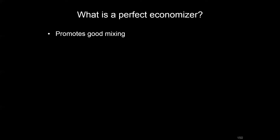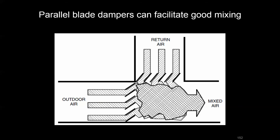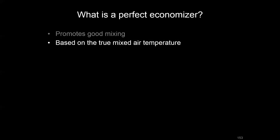First, a perfect economizer would promote good mixing, and there are right ways to do that. With the right damper selection — the size, the relative location to one another, and having a parallel blade type that can redirect air streams to crash into one another — you can have good mixing in your mixed air plenum.